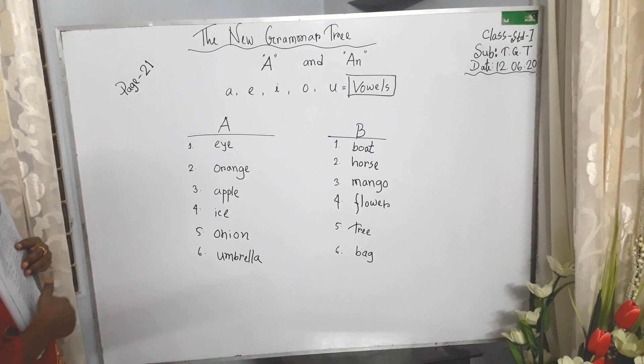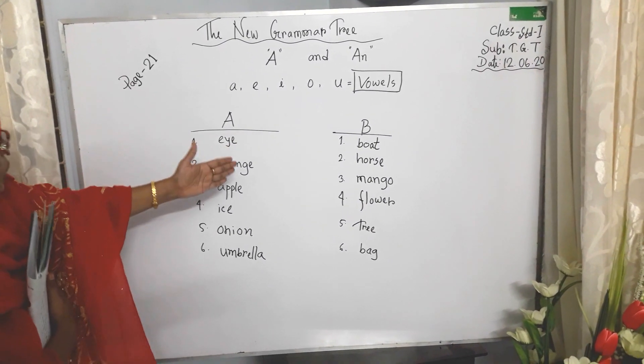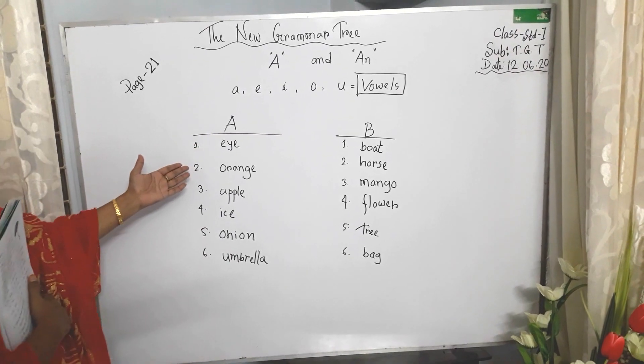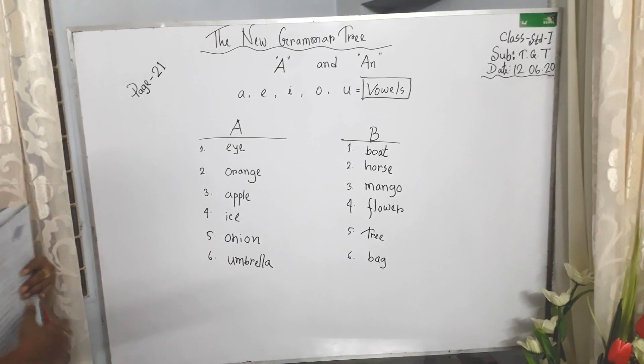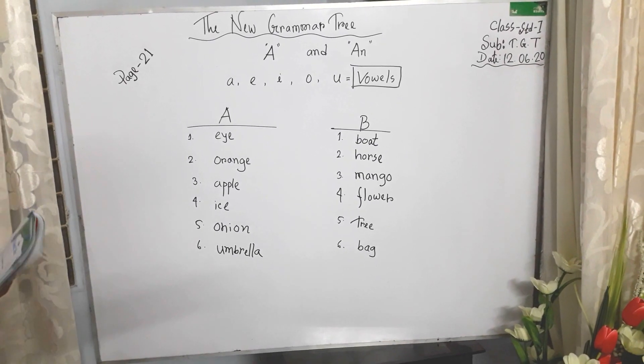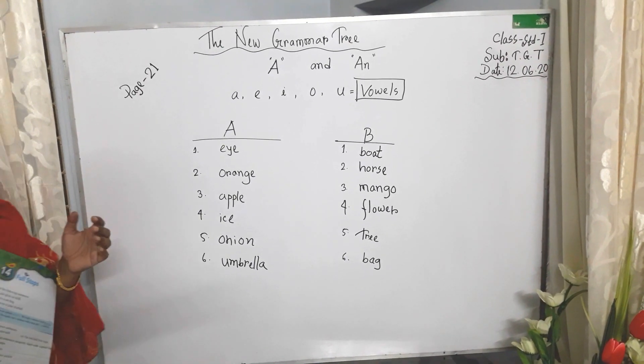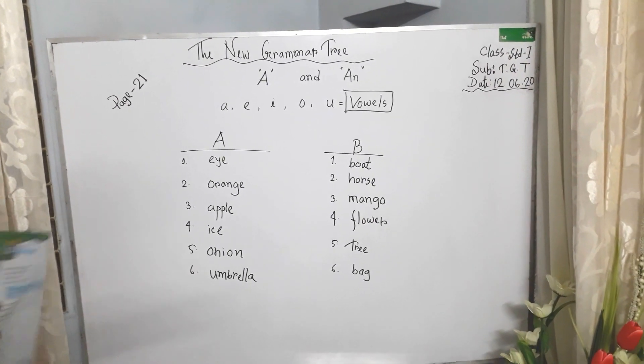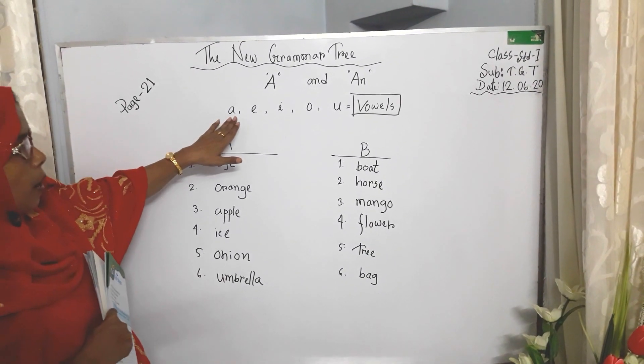There we know, we say only 'a', but with vowels we use 'an'. Just, we have to learn vowels. These five letters are called vowels.